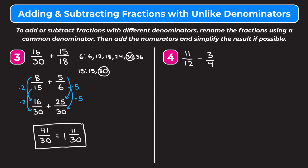Moving on to example 4, we have 11 twelfths minus 3 fourths. We can't simplify either of these fractions, so we start by finding the least common multiple of 4 and 12. Multiples of 4: 4, 8, 12, 16, 20, 24, 28. The first multiple of 12 is itself, which is 12, and that's in our list of multiples of 4. So the least common multiple of 4 and 12 is 12.